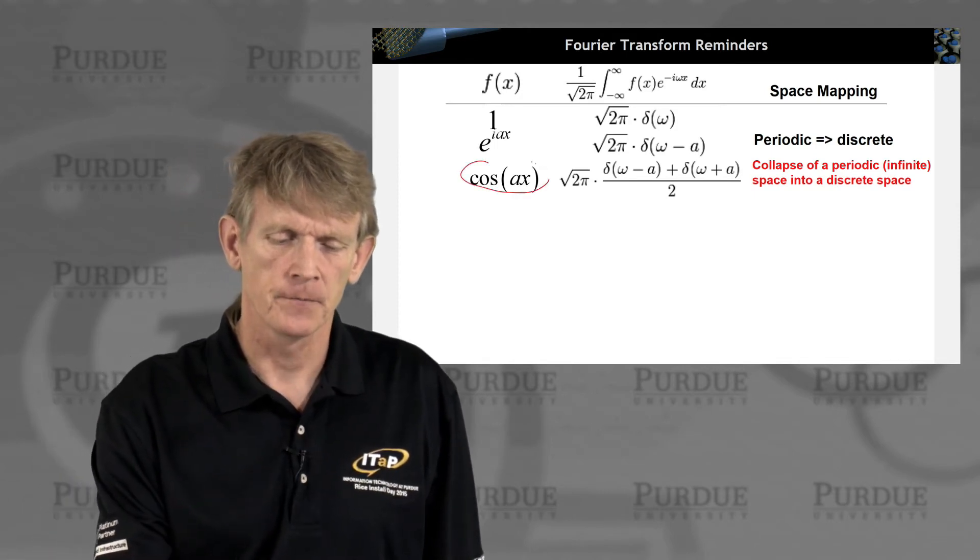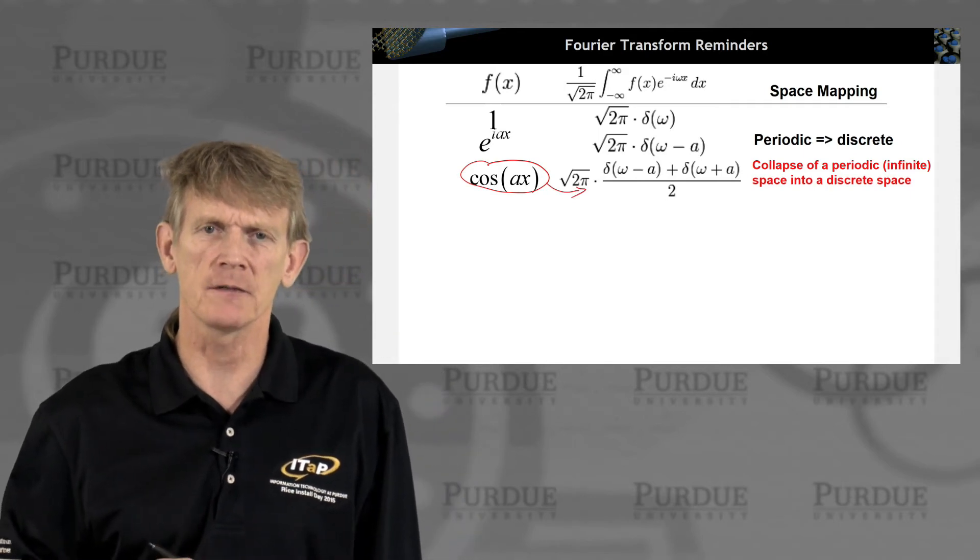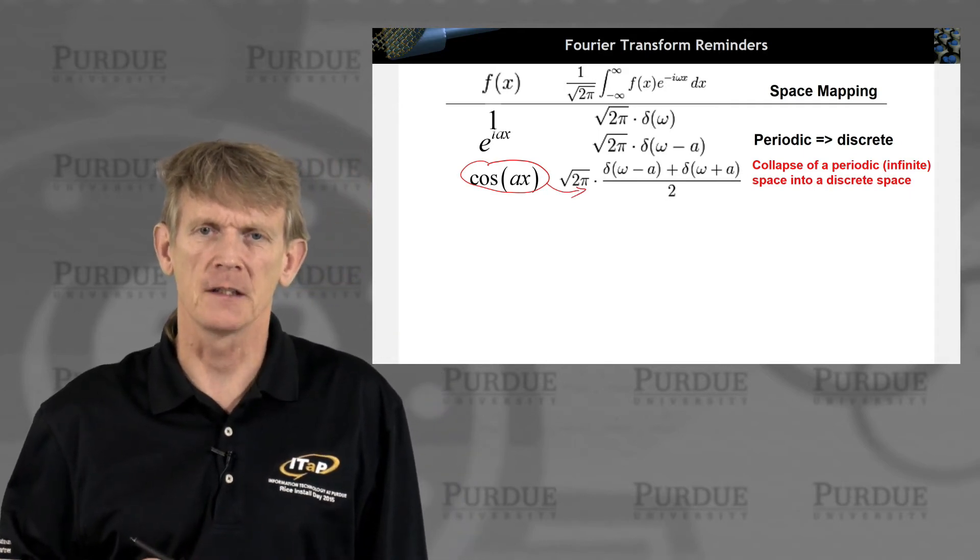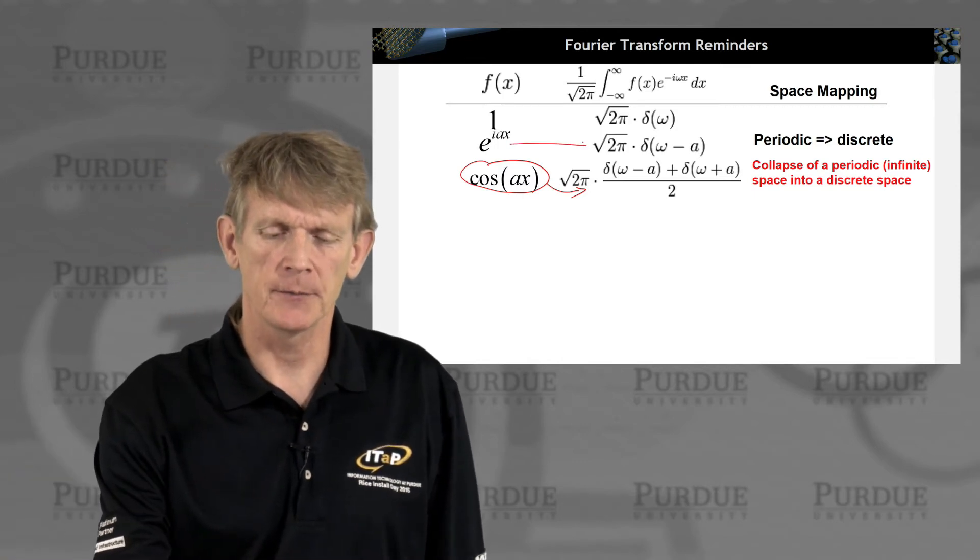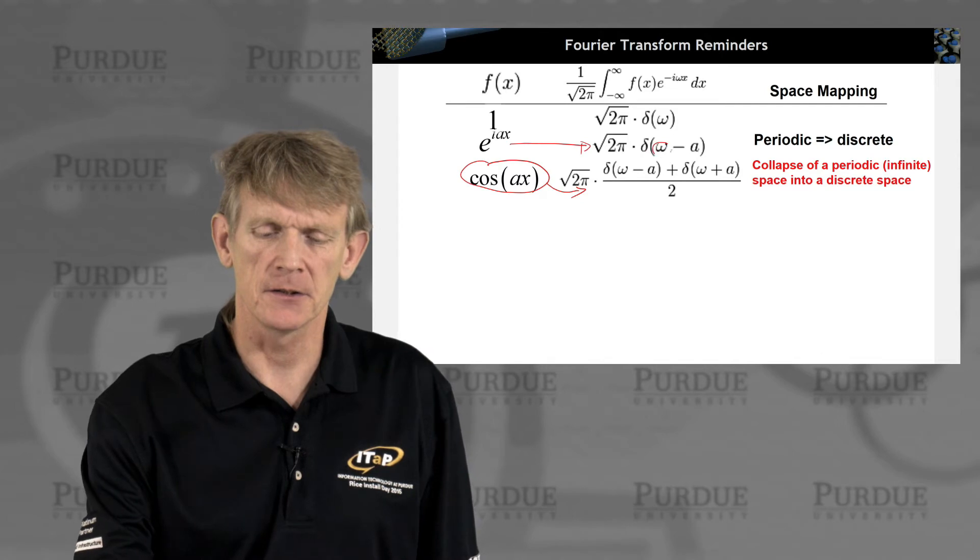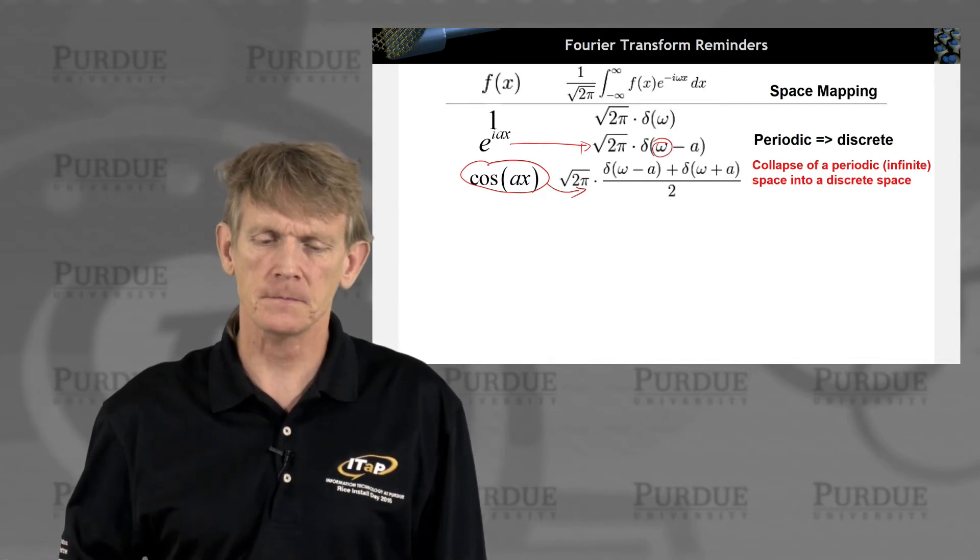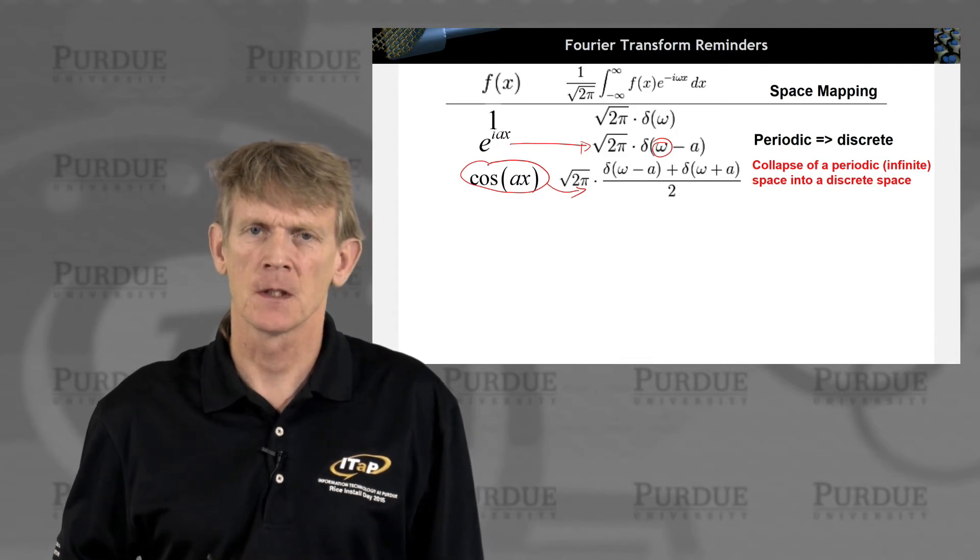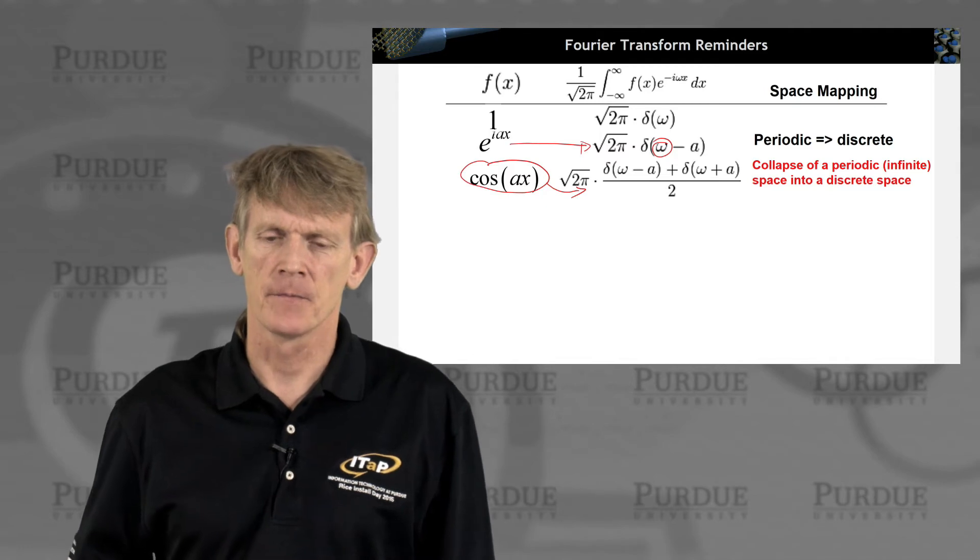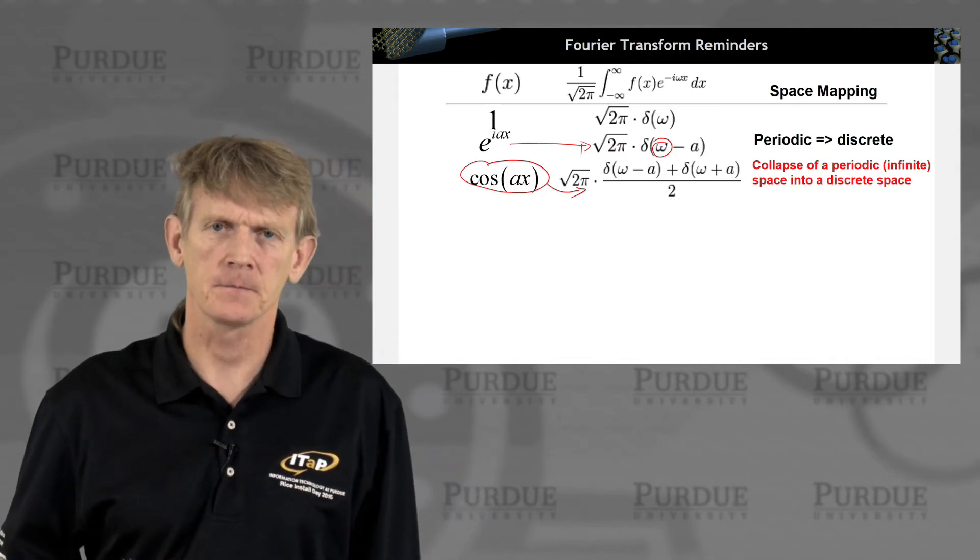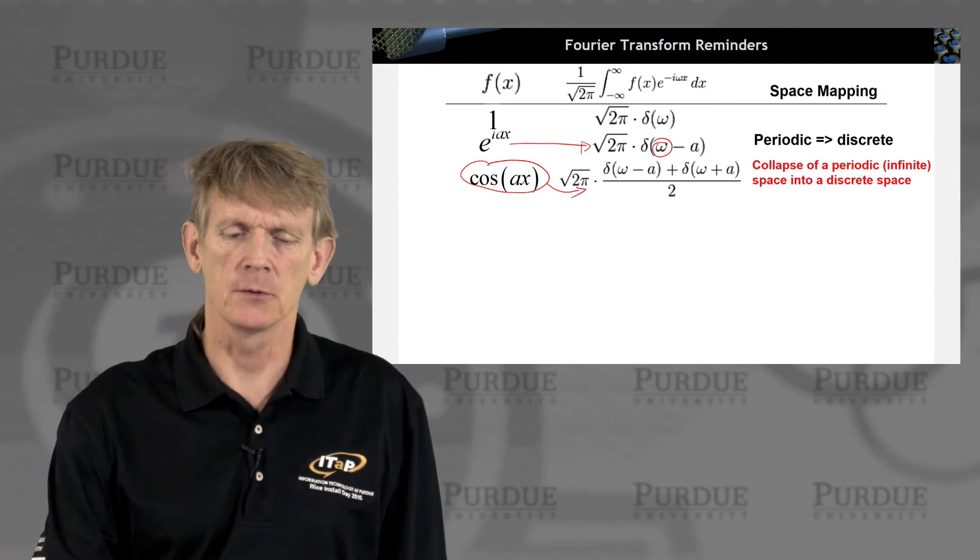If you take a periodic function, like a cosine, you might remember that that maps as a Fourier transform into two delta functions, a left and the right going plane wave. An individual plane wave maps into a single delta function that is shifted by the frequency of the wave and the frequency content of the wave. So a single wave has exactly a delta function of a frequency content, and it has a certain amplitude.